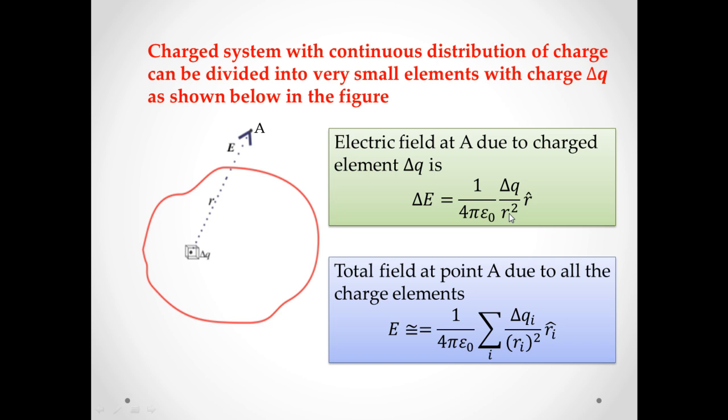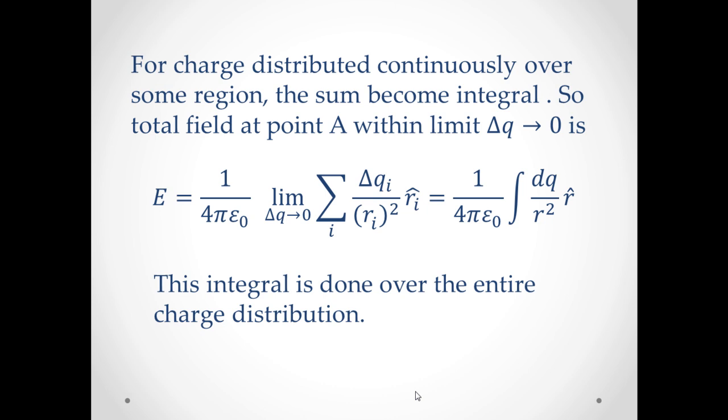Here this r is the distance of element under consideration from point A, and this r cap is the unit vector in the direction from charge element towards point A. Total electric field at point A due to all such charge elements in the charge distribution is given by this equation, where this index i refers to the ith charge element in the entire charge distribution.